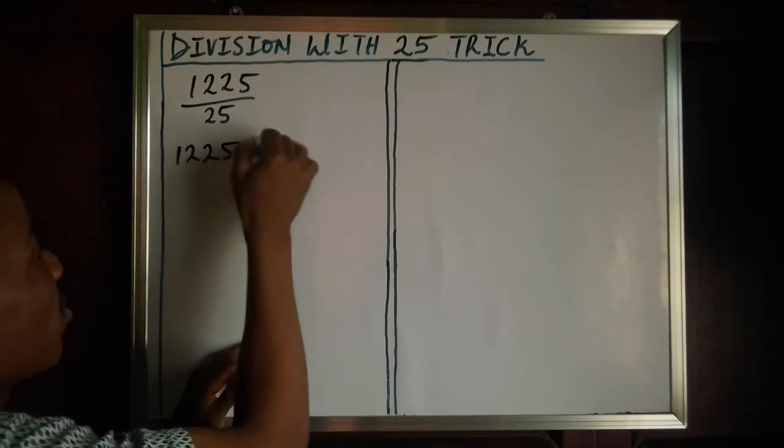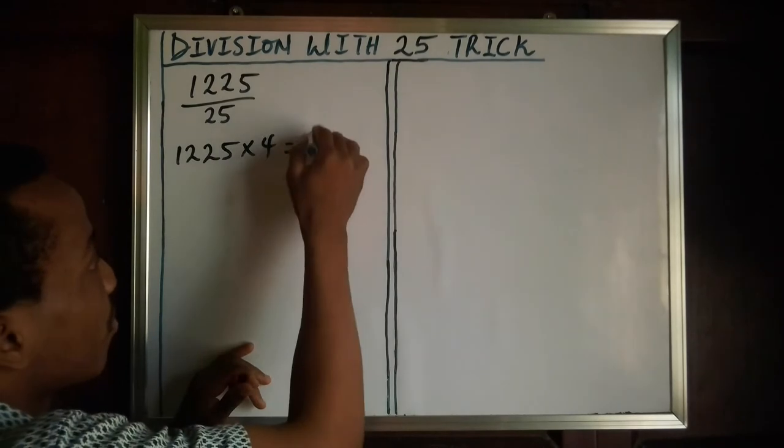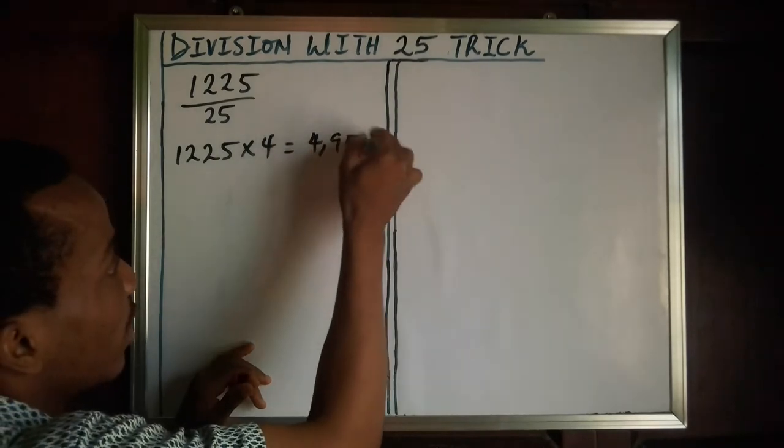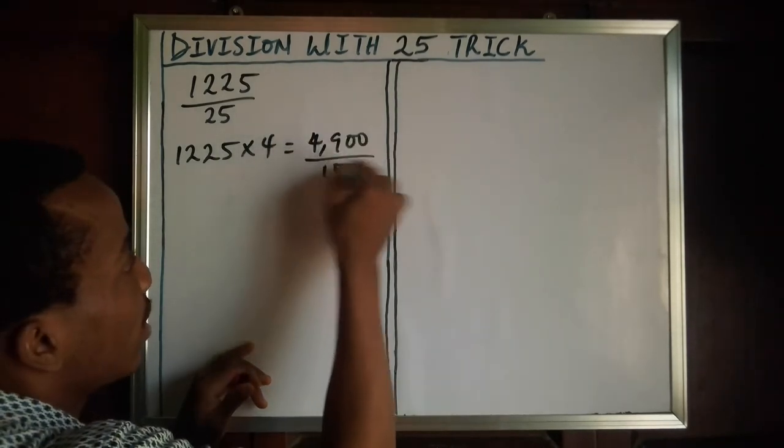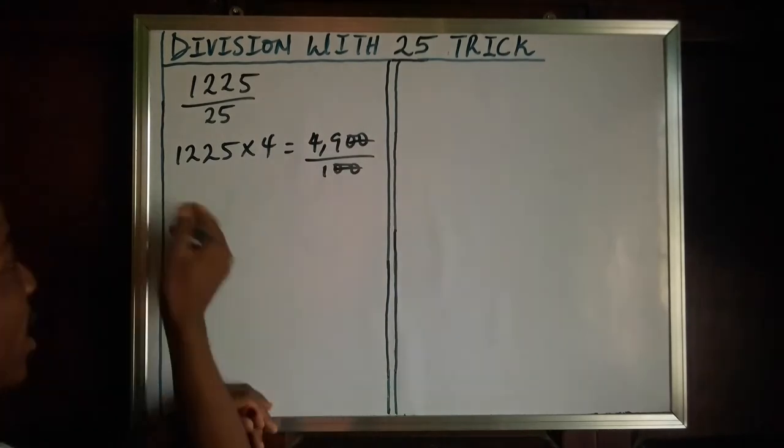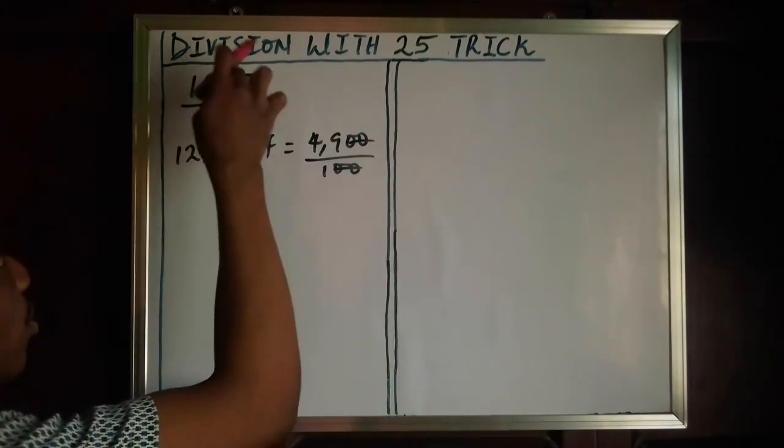1225 multiplied by 4. This gives us 4900. If we divide by 100, the answer to 1225 divided by 25 is 49.